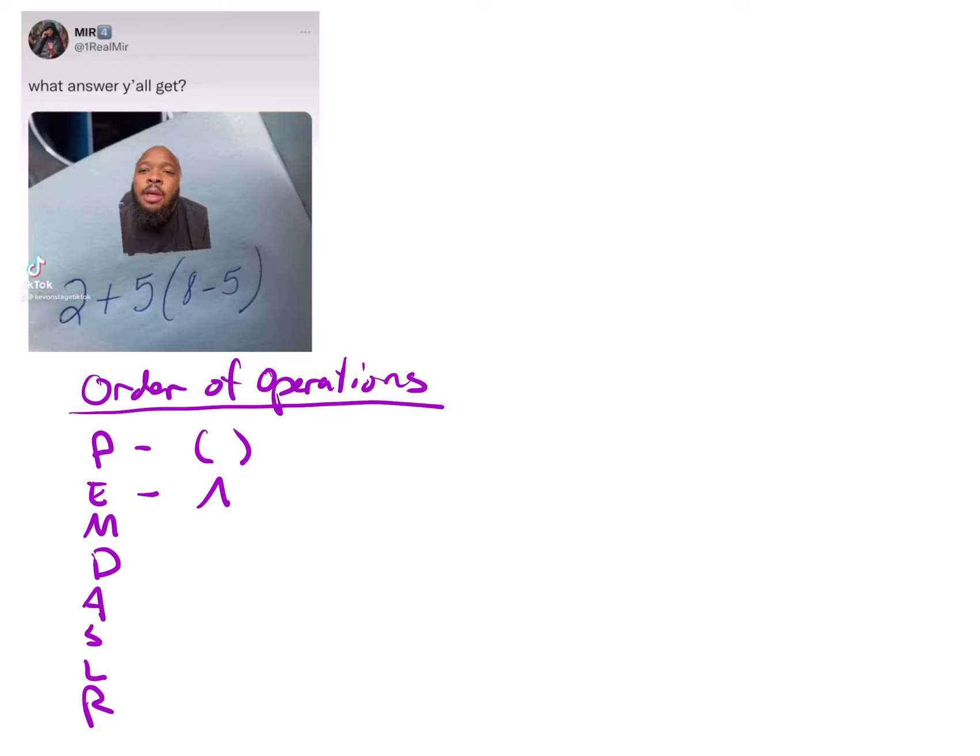Now here's a caveat though. The M stands for multiplication and the D stands for division, but you have to group those together. The A stands for addition, S stands for subtraction, and again you have to group those together. This L stands for left and the R stands for right.